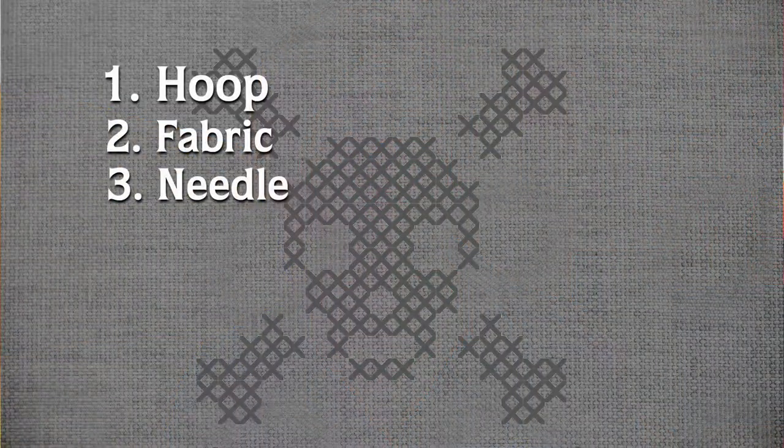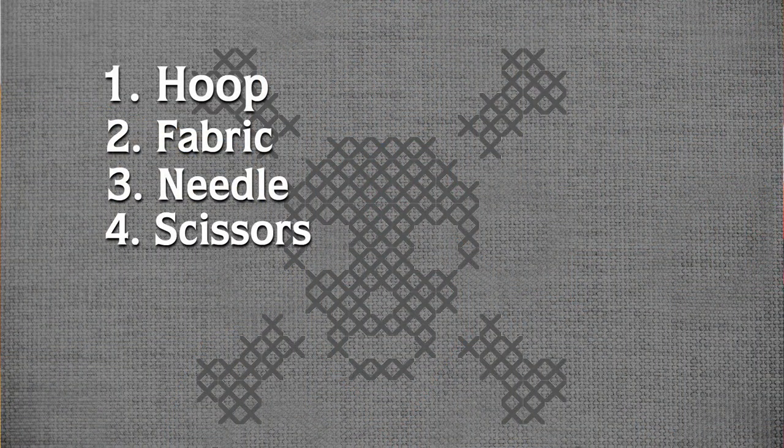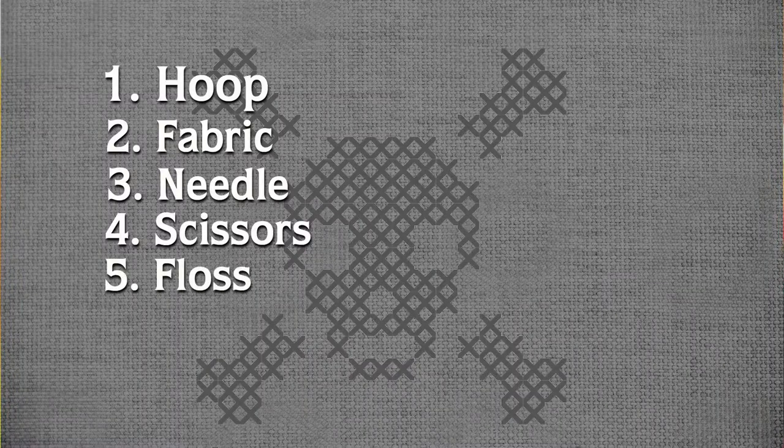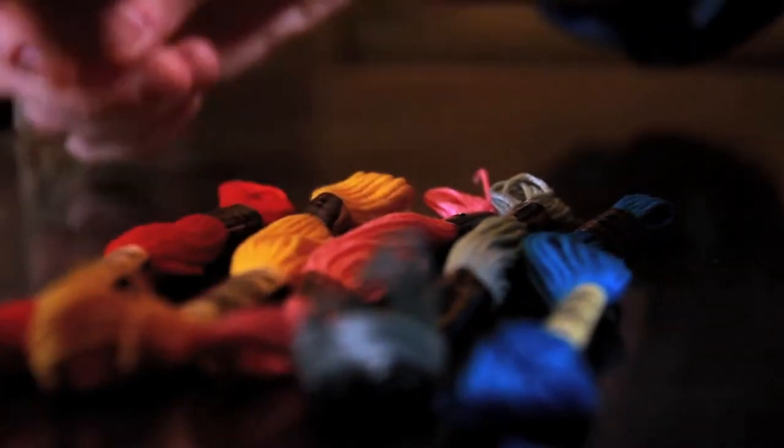The next thing you need is scissors. A large pair for cutting fabric and a small pair for cutting thread. A word about scissors: spend a little extra on good quality scissors and never cut anything but fabric with them — you will thank me. You also need floss, which is just a fancy word for the embroidery thread that we use to embroider with. You can get it at any craft store in any color imaginable. Super cheap.